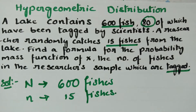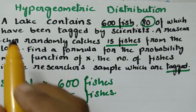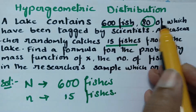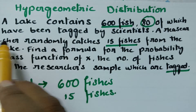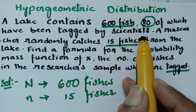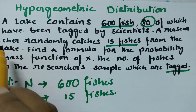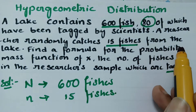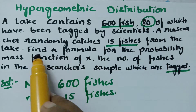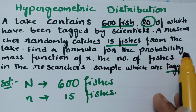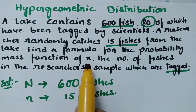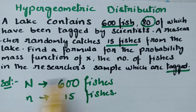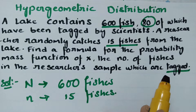This video is on hypergeometric distribution. A lake contains 600 fishes, 80 of which have been tagged by scientists. A researcher randomly catches 15 fishes from the lake. Find the formula for the probability mass function of x, the number of fishes in the researcher's sample which are tagged.